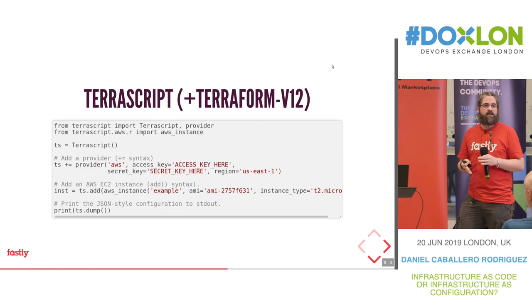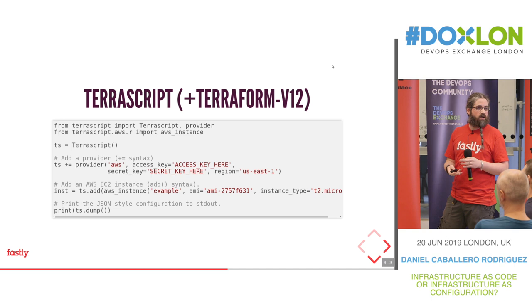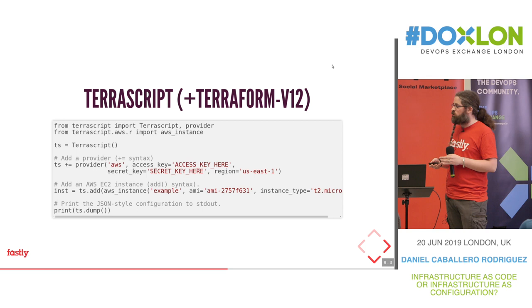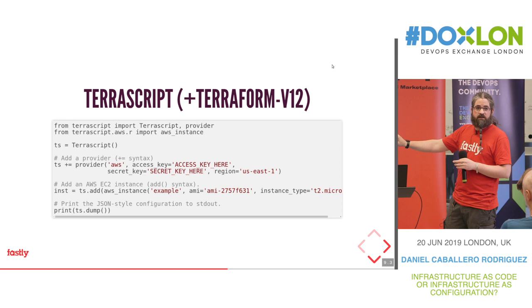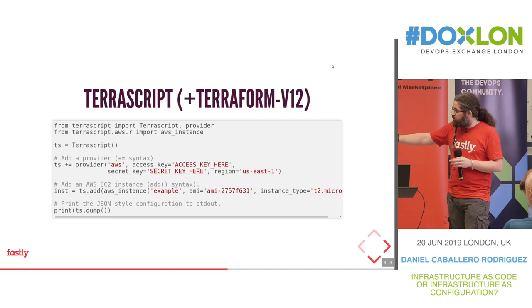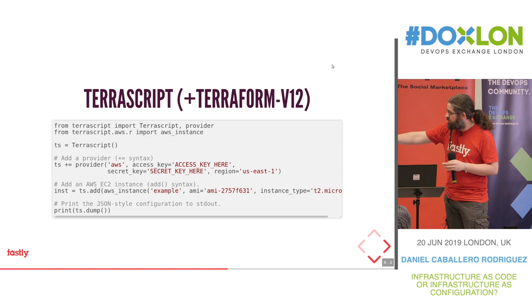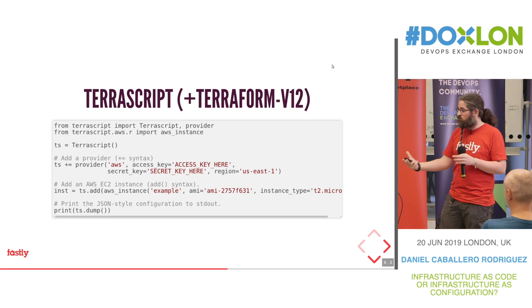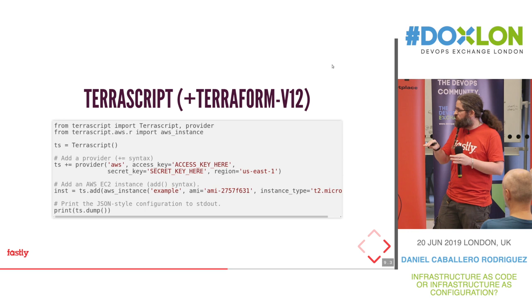Terraform is the common choice for a lot of companies, but it's pretty static — if you want dynamic things, you normally struggle a bit with the specific configuration language. Some people created TerraScript, which benefits from the JSON support of the latest Terraform version. Via Python, it offers abstractions for AWS instances. Just calling some functions generates a JSON file you can deploy via Terraform. It's more or less like Troposphere for CloudFormation.